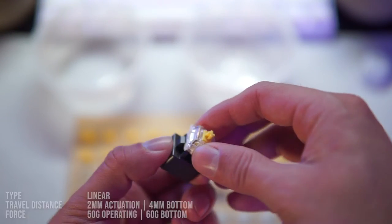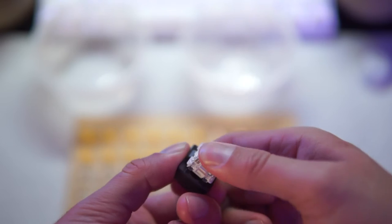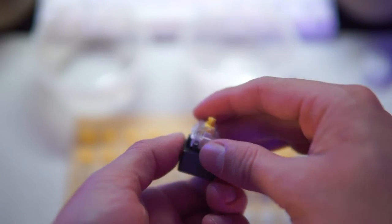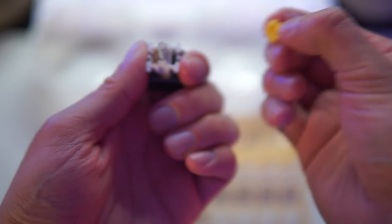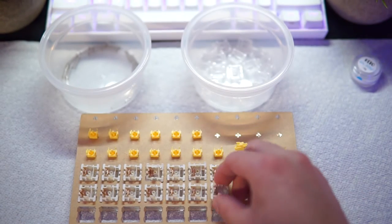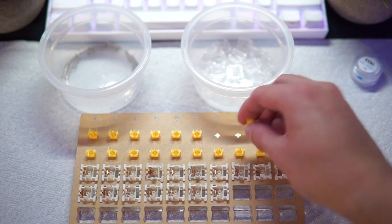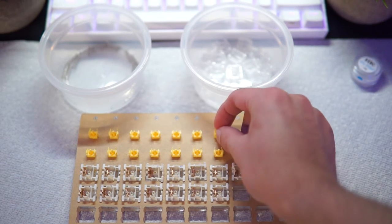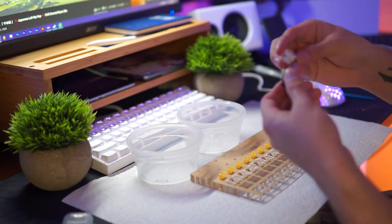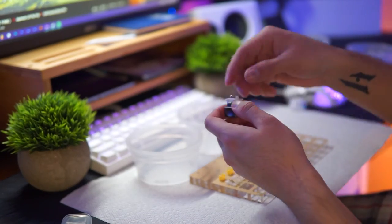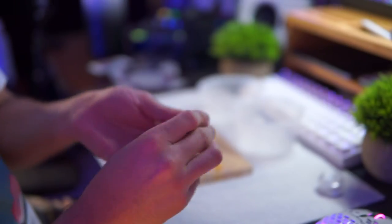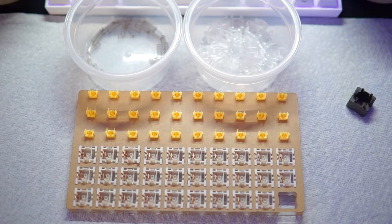Using a keyswitch opener, I disassembled all of the switches that I would need for this build. This took a bit of getting used to, but once I got the hang of it, it became really easy. I also brought out three plastic containers, but ended up only using two. After disassembling the first batch of switches, it was time to start lubing.